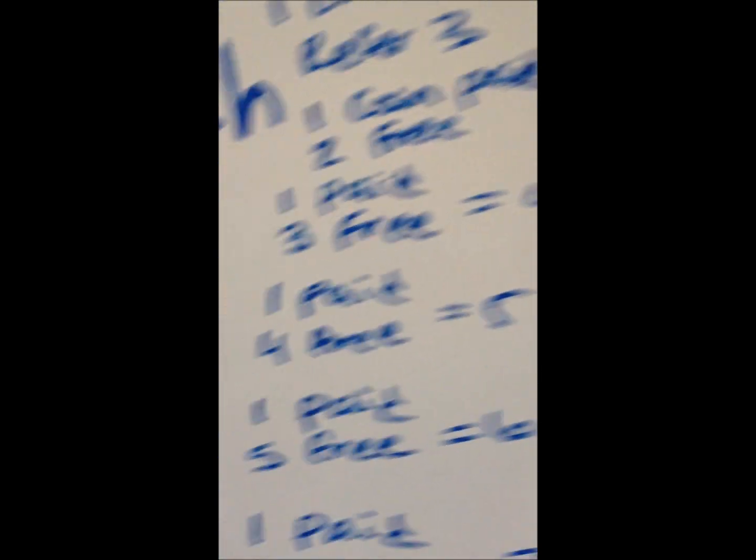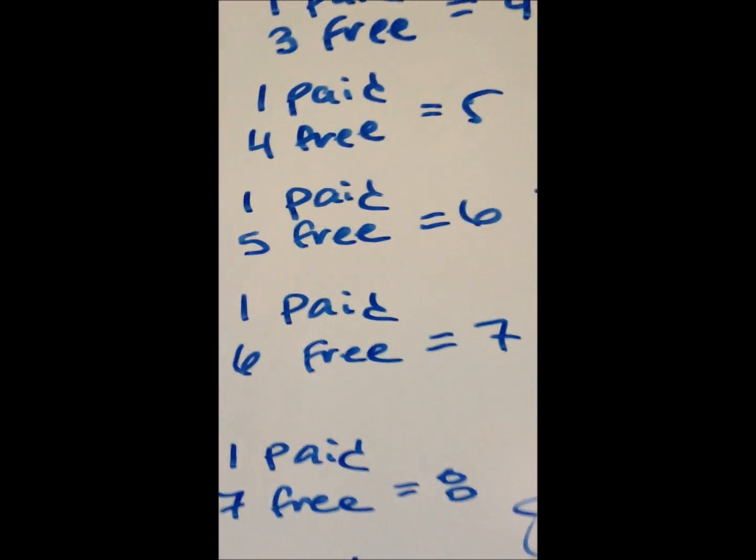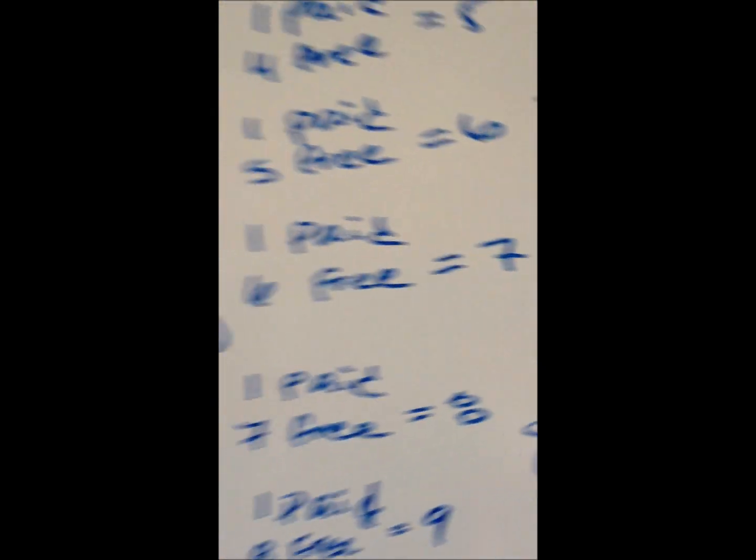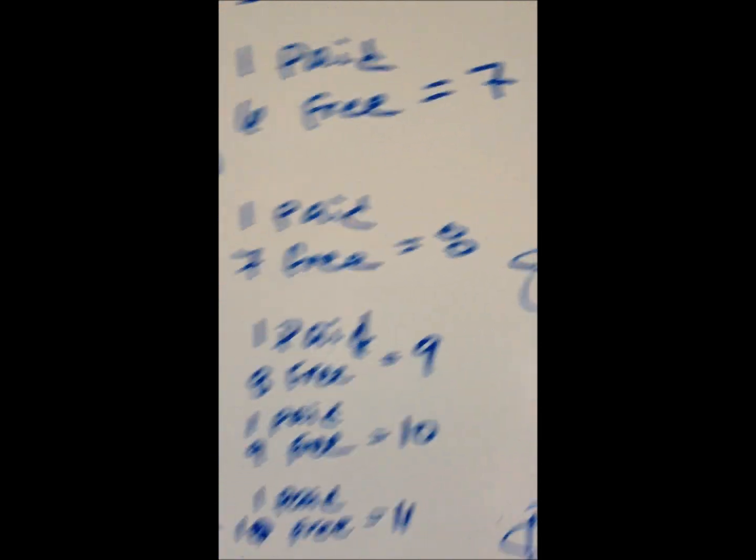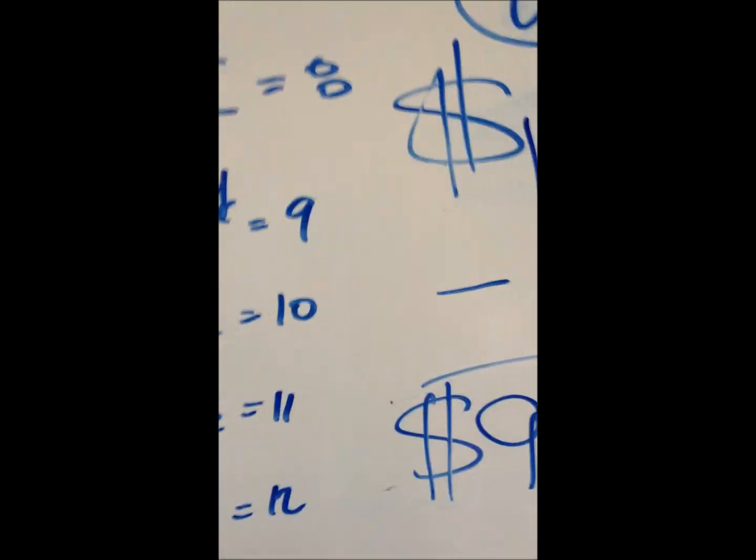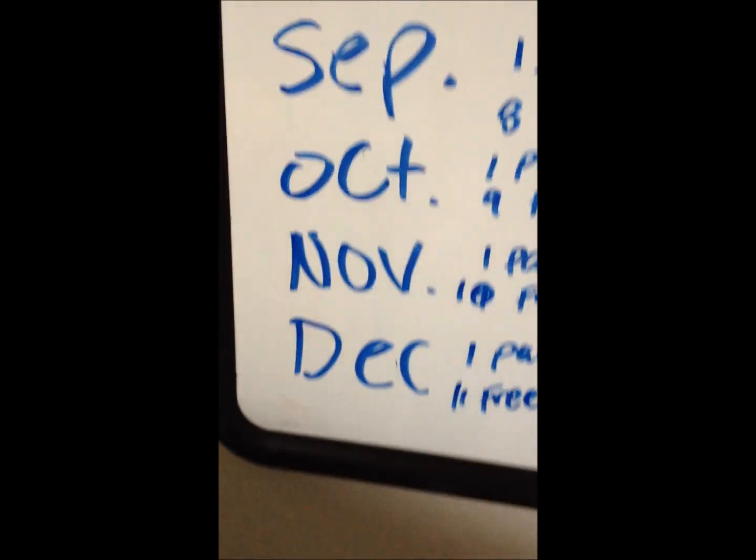Three, see, four going down the line. One paid, five free. One paid, six free, that's seven. One paid, seven free, that's eight. One paid, eight free, that's nine. October, November, December, boom boom, twelve.